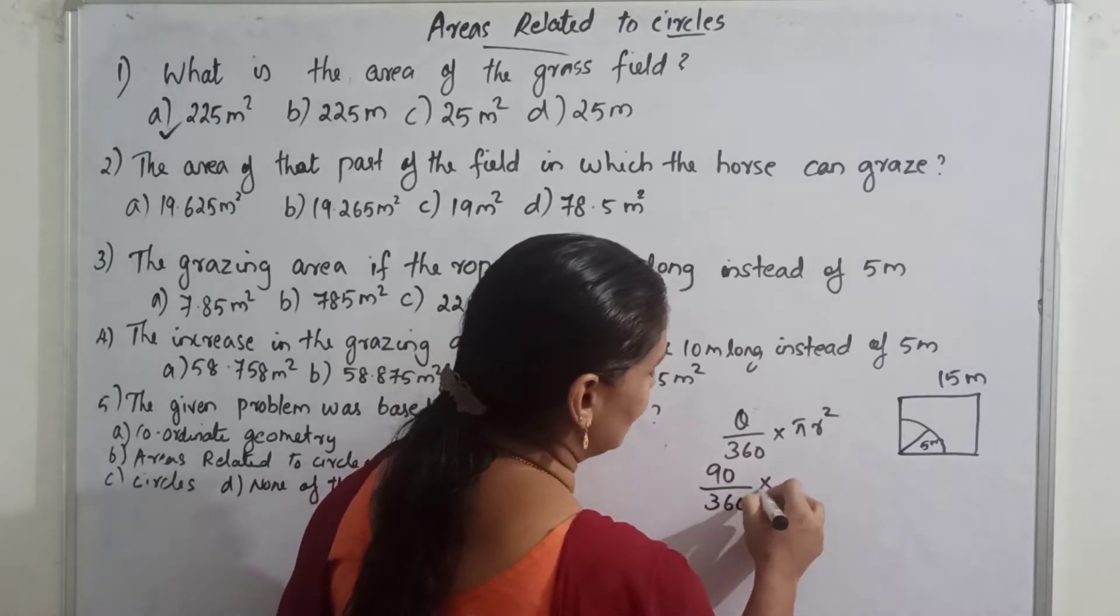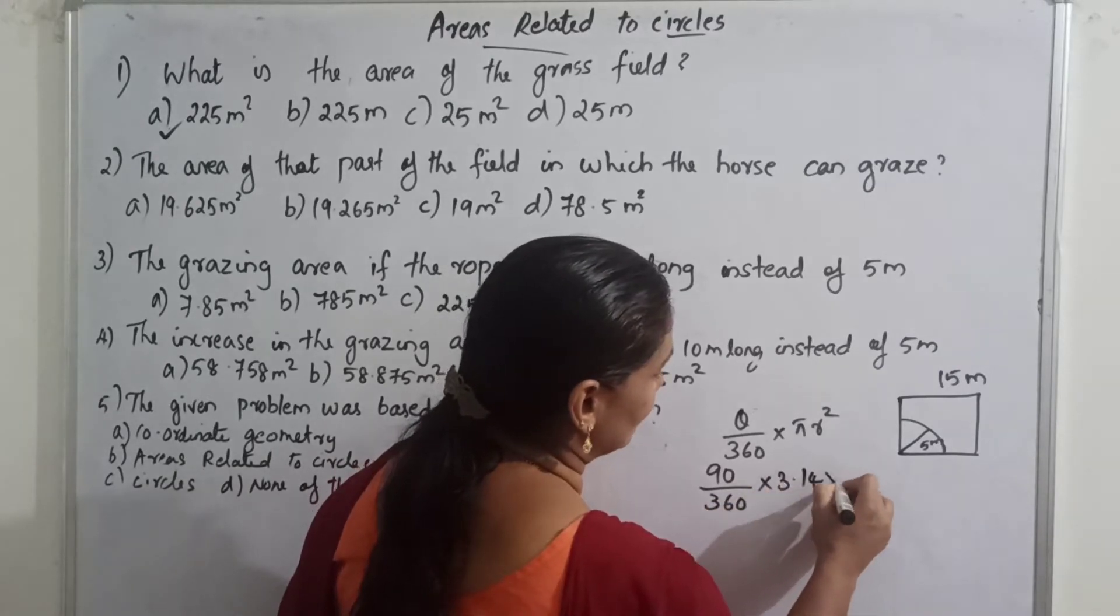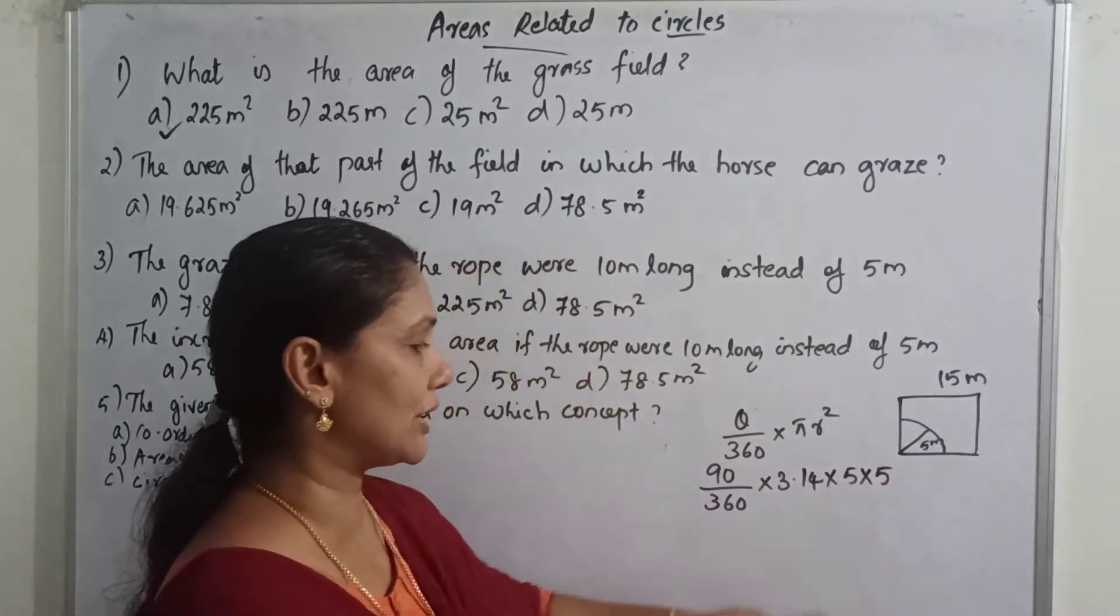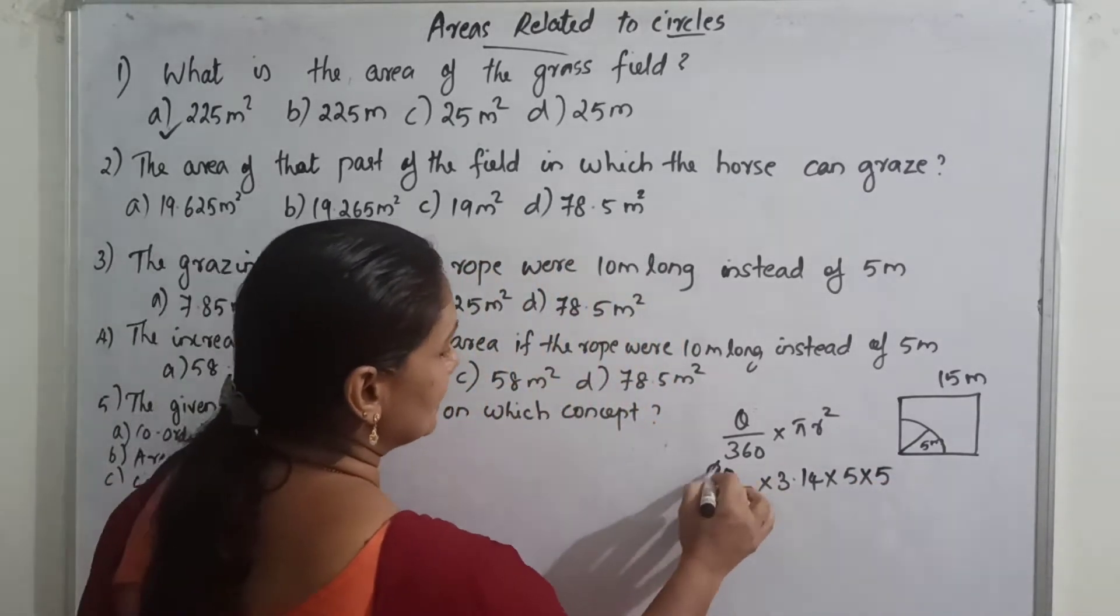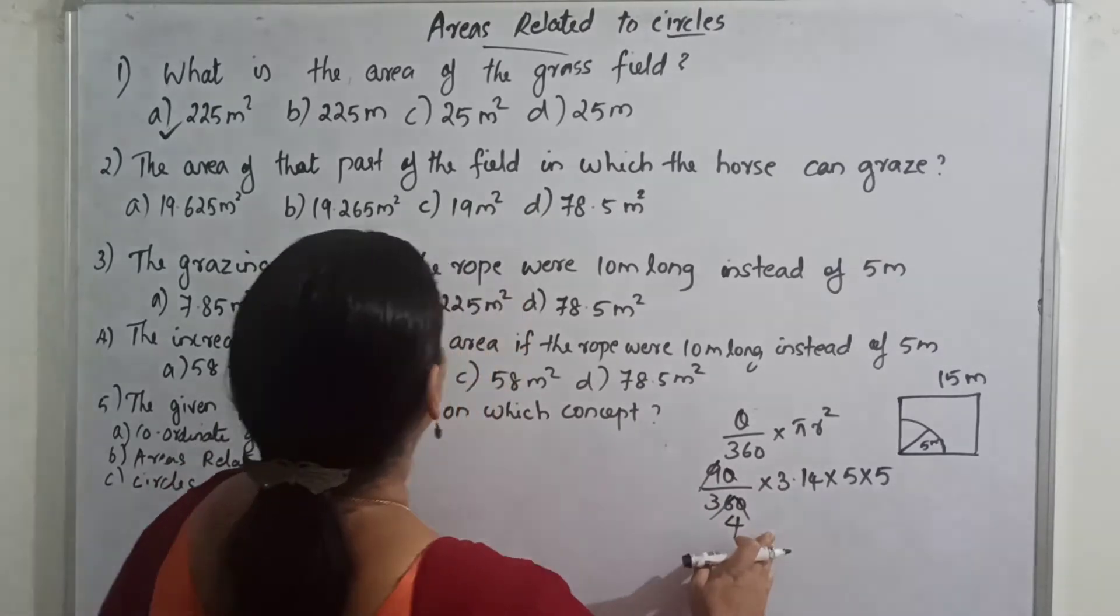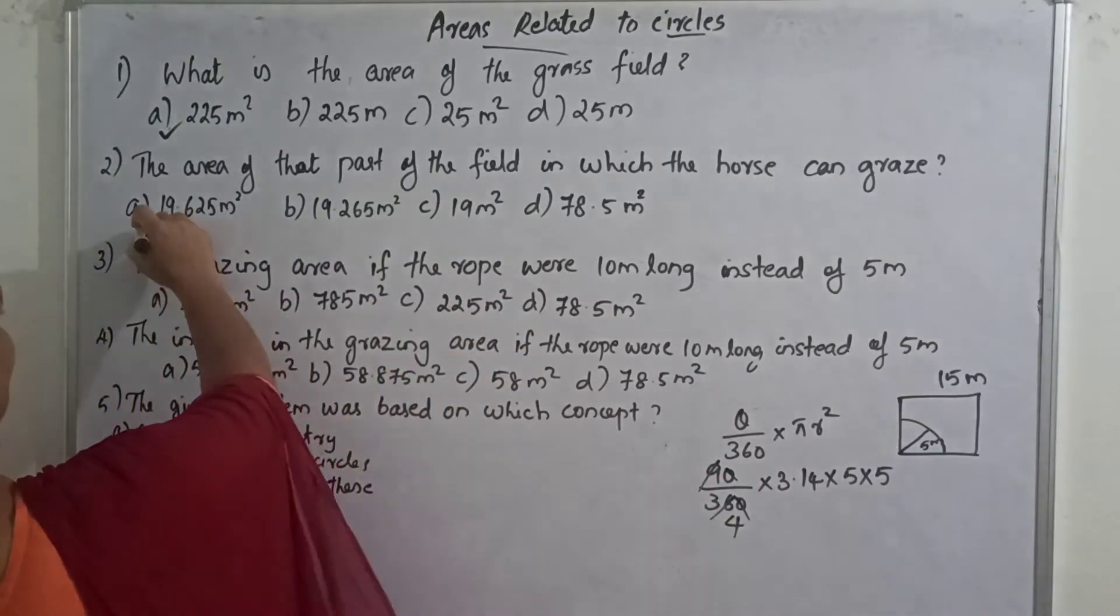90 by 360 into pi is 3.14. Radius is 5m long rope. 5 into 5. Then 1 by 4 into 3.14 into 25. This gives 19.625 m².